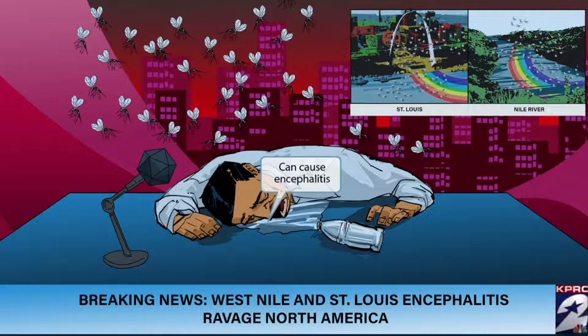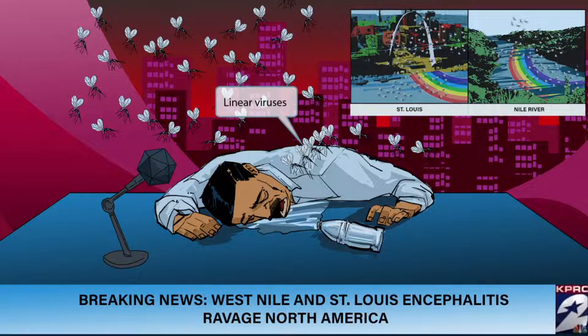It's the development of encephalitis that makes both of these viruses so scary. Now look at this line of mosquitoes on his back, each waiting its turn to take a bite from his neck. This line of mosquitoes will help you remember that these viruses are linear.